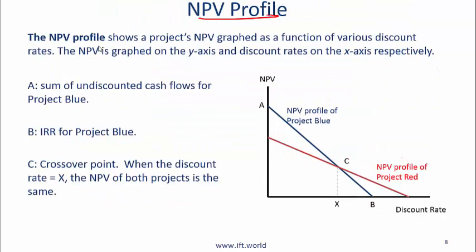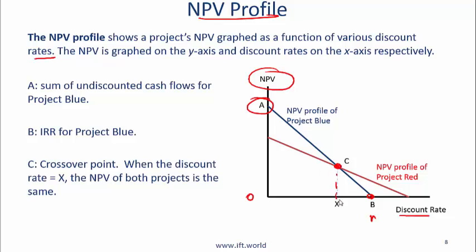NPV profile. The NPV profile shows a project's NPV graphed as a function of various discount rates — NPV is plotted on the y-axis and discount rate on the x-axis. Here I have shown the NPV profiles for two projects: project blue and project red. Point A is where project blue's NPV profile intersects the y-axis, representing the sum of the undiscounted cash flows for project blue. Point B represents the discount rate such that the NPV is zero — so this is the IRR of project blue. Project red intersects at the crossover point, which is the rate at which the NPVs of both projects are the same.